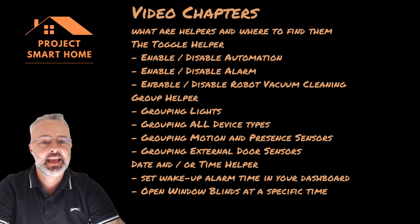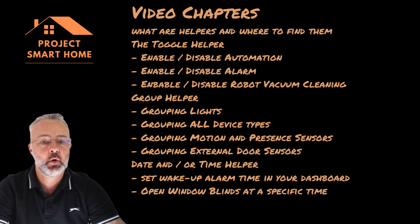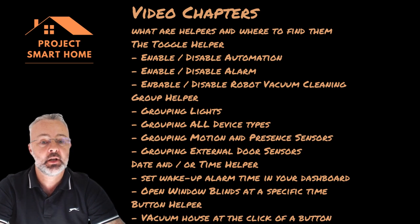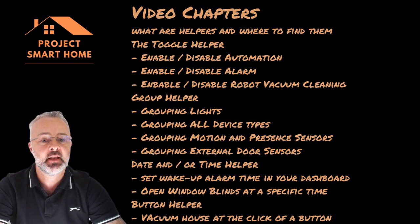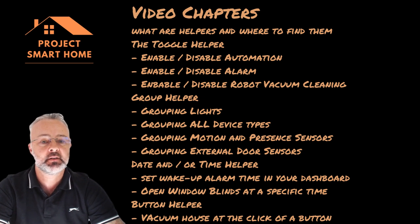The next one is the date and/or time helper - how I'm using that for wake-up routines and setting the alarm, and organizing the automation to open my window blinds at particular times of day. And then the last helper I'm going to show you is the button helper, which I've started using fairly recently as I've introduced my Roborock S7 vacuum cleaner. I've now got buttons on my dashboard to initiate a cleaning routine around the house.